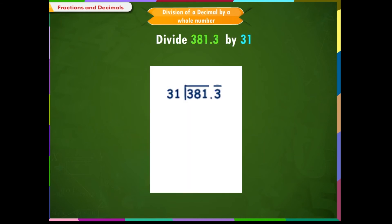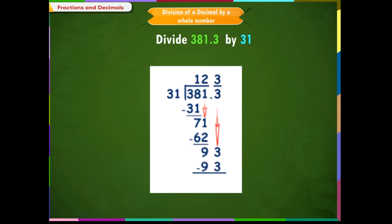Let us see one more example. 381.3 divided by 31. As we have done in the previous problem, we will use the long division method to divide the numbers by ignoring the decimal point. The quotient we get is 123. Since there is one place of decimal in the dividend, we put the decimal point on the result by counting one place from the right.